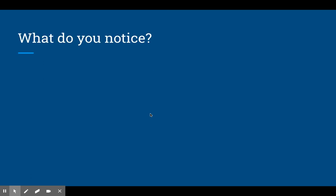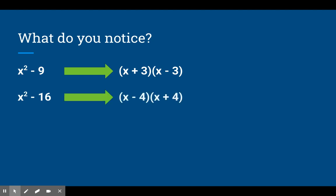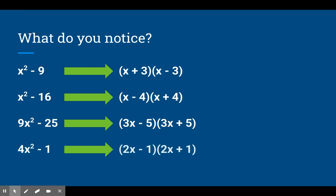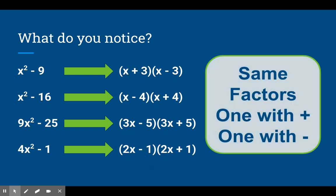I'm going to go through a couple of examples, and I want you to think about what you notice. So x squared minus 9 factors to x plus 3 times x minus 3. x squared minus 16 factors to x minus 4 times x plus 4. 9x squared minus 25 factors to 3x minus 5 times 3x plus 5. 4x squared minus 1 factors to 2x minus 1 times 2x plus 1. Take a minute to think about what you notice. We have the same factors, except one is with a plus sign and one is with a minus sign.